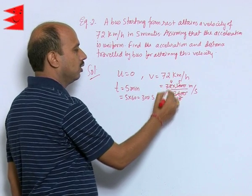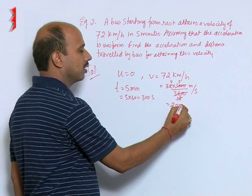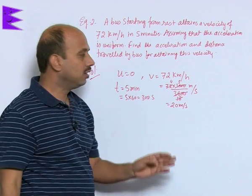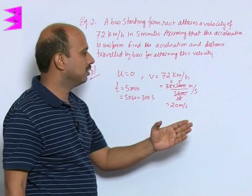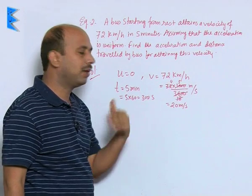So this will get cancelled and here this is 5, this is 18, this is 4, so that is 20 meters per second. Basically when you want to convert kilometers per hour into meters per second, just you multiply by 5 by 18.